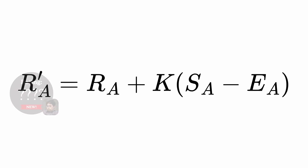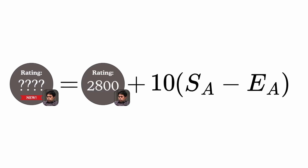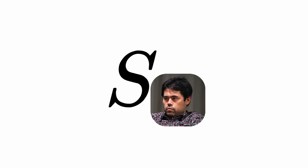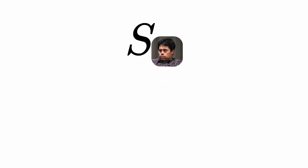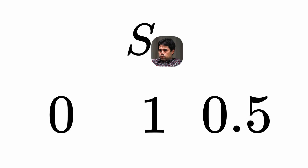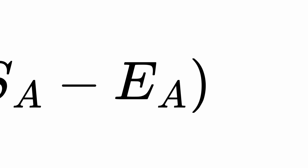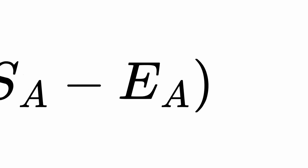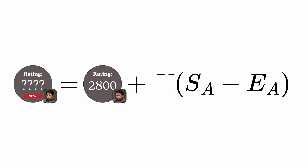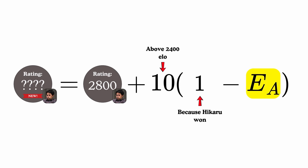Now the equation reads: the new ELO score of Hikaru equals Hikaru's current score plus 10 — because Hikaru has more than 2400 ELO — times whatever is in the parentheses. Let's break them down. A is Hikaru, and S is the result of the chess match. It can be one of three numbers: 0 represents a loss, 1 represents a win, and 0.5 represents a draw. For this video's sake, let's say Hikaru won against Danya, so S equals 1. E is the expected outcome of the match, which needs its own equation to figure out. So far the equation reads: the new ELO score of Hikaru equals Hikaru's current score plus 10 times 1 because Hikaru won, minus the expected outcome.